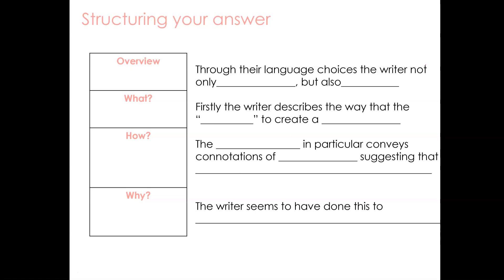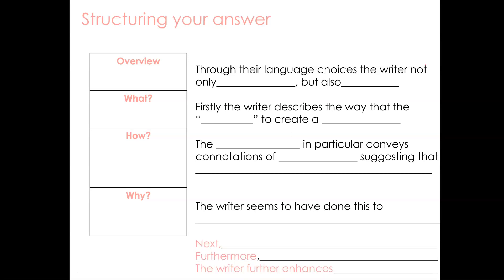The overview sentence always remains the same: we say 'through their language choices the writer...' and we say two things that the writer has done. We then go on to the What stage — introducing it. Firstly, what does the writer describe? Here you can embed your quote directly into the sentence. What impression does it create? Next we go on to explore the How — we zoom in on a particular word or method, explore the connotations of the language, building up that interpretation and exploring the layers of meaning. We can go on in the How section as long as we need to, before we finally end up with a Why: why does the writer seem to have done this? What is it perhaps that they are suggesting to the reader? Using connectives and gluing phrases will help to build up a coherent, fluent, and detailed response.